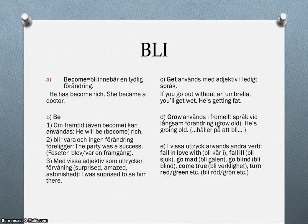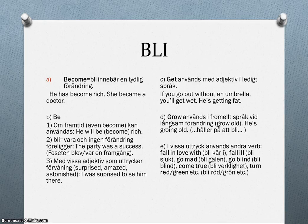There is a spelling error on screen — 'see' should have two e's. Then we also have 'get', which you use in casual language — for example, 'if you go out without an umbrella you'll get wet', or 'he's getting fat', but in Swedish we translate it with 'bli'. 'Grow' is used in more formal language — there is another spelling error there — and is used when there is a slow change, for example, 'he is growing old.'